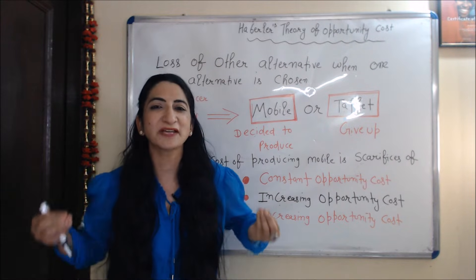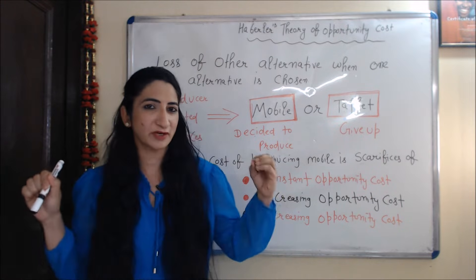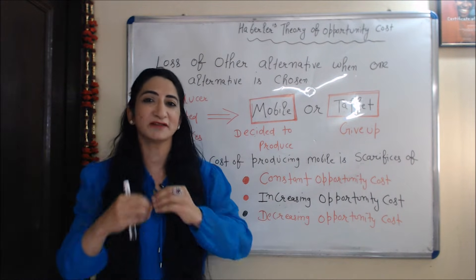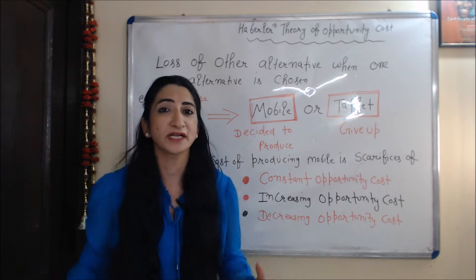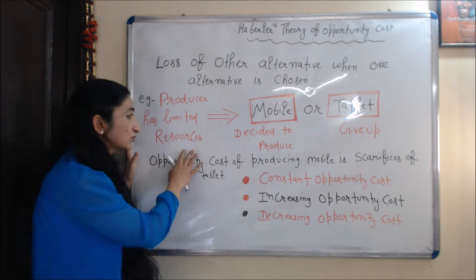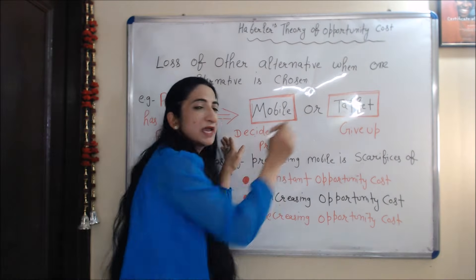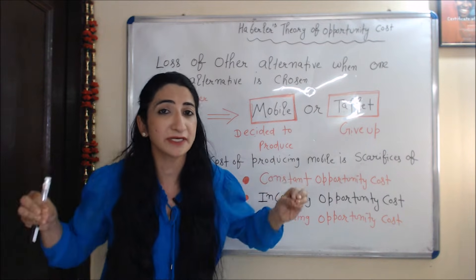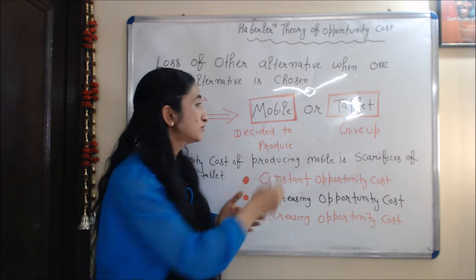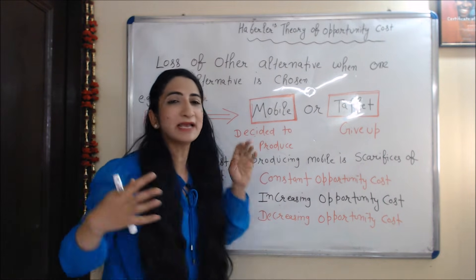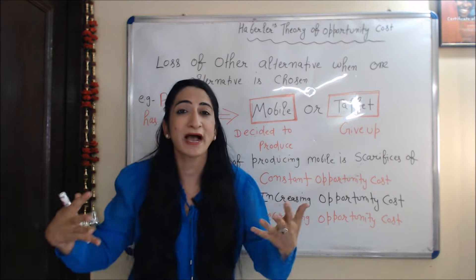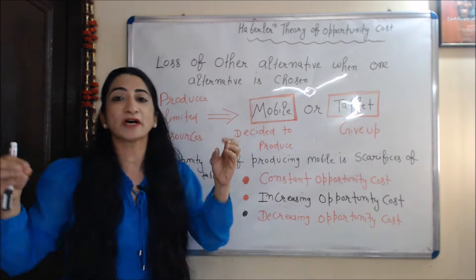Hello everyone, my name is Minisetti. Today we are going to learn about Haberler's theory of opportunity cost. Opportunity cost is the loss of other alternatives when one alternative is chosen. For example, a producer has limited resources and with those limited resources has only two alternatives: either produce mobile or tablet. If the producer decides to produce mobile and gives up tablet, the opportunity cost of producing mobile is the sacrifice of tablet.